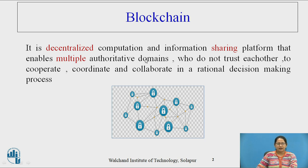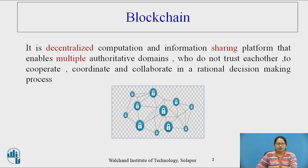In a traditional worldwide web, a client-server architecture is used in which data or information is stored at one place, managed or controlled by a single entity — that is, a server. On the other hand, in a distributed blockchain, data is stored at multiple nodes or participants within a network, which maintain, approve, and update new entries. So blockchain is a decentralized working environment.